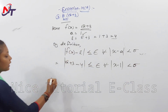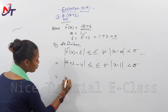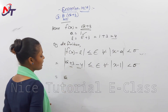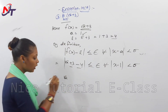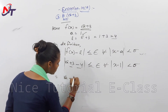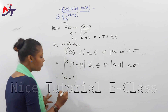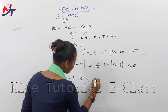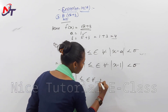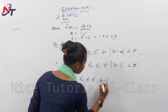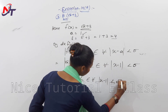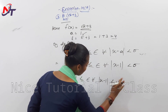So we have: mod of root x plus 3 minus 4, that equals mod of root x minus 1, which must be less than or equal to epsilon for all x minus 1 mod less than delta.